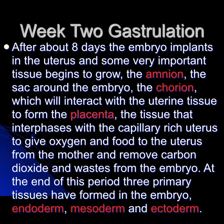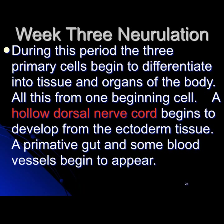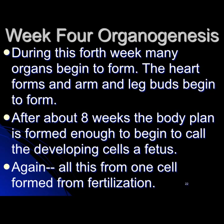At the end of week two, three primary tissues are formed in the embryo: endoderm, mesoderm, and ectoderm. Week three: neurulation — during this period, the three primary cell layers begin to differentiate into tissues and organs of the body. All this from one beginning cell created from the joining of two gametes. A hollow dorsal nerve cord begins to develop from the ectoderm and a primitive gut and some blood vessels begin to appear. Week four: organogenesis — many organs begin to form, the heart forms, and arm and leg buds begin to form. After about eight weeks, the body plan is formed enough to call the developing cells a fetus. Again, all from one cell formed from fertilization.